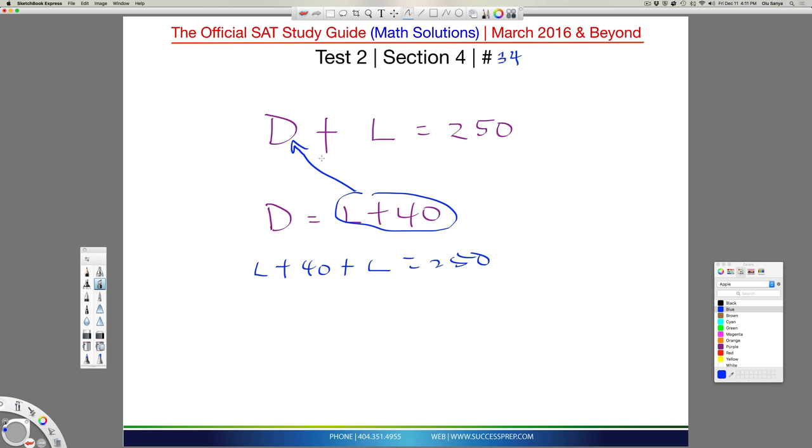So I'm just plugging this into the D slot. So L plus L is obviously 2L plus 40 equal to 250, subtract 40 on both sides. So this is 210. This is still 2L from this top. It just falls down. And then divide by 2, divide by 2.